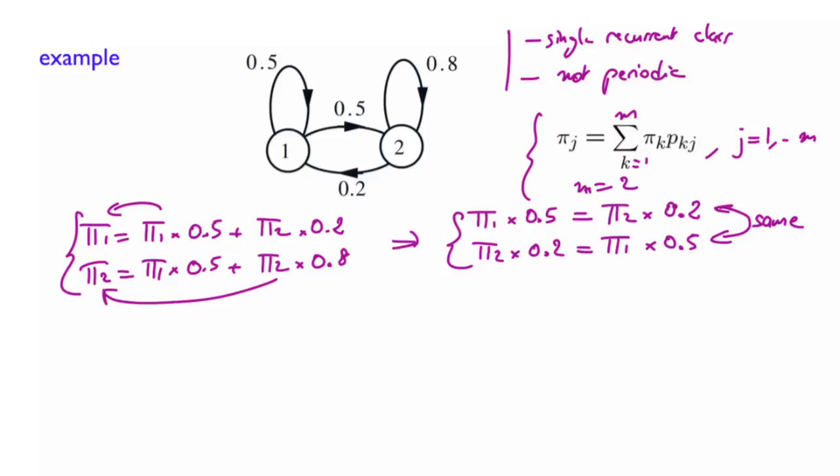So they are not enough to define a unique solution. We have to add another equation. And we know that these are probabilities. So pi 1 plus pi 2 have to be 1. Now we're going to keep one of these two. Let's say this one. I'm going to write it here. We can rewrite it by saying that pi 1 times 1 over 2 equals pi 2 times 1 over 5.